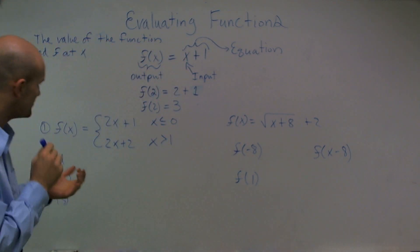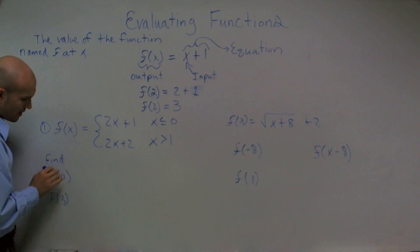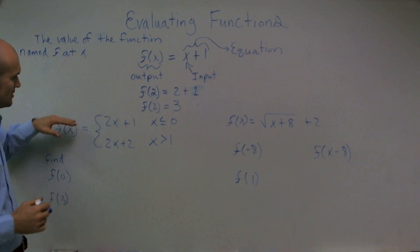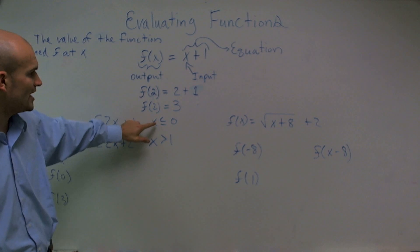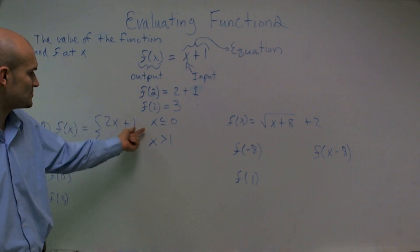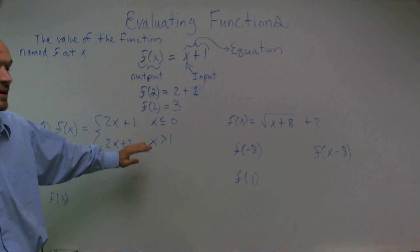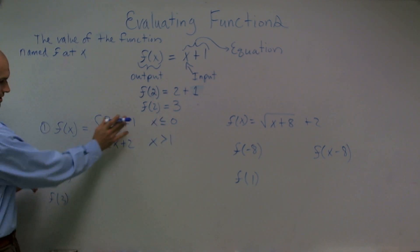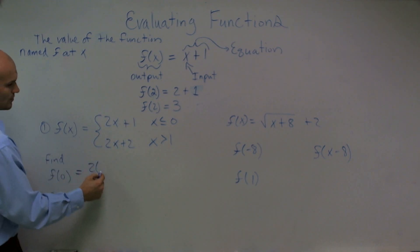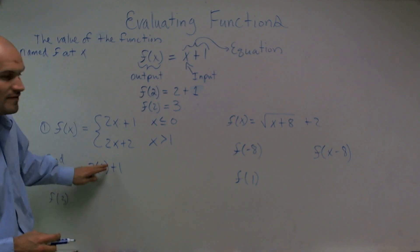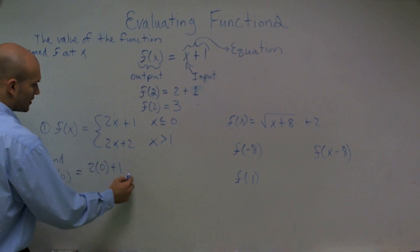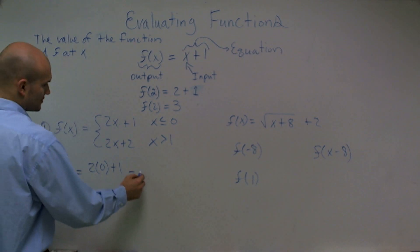Welcome back. What we're doing is evaluating which function to use for our input value. Here I want to find the value of my function f at zero. When looking at the constraint of this piecewise function, it says evaluate 2x plus 1 for all values less than or equal to zero, and use 2x plus 2 for all input values where x is greater than 1. I look at zero — zero is equal to zero, so I can only evaluate it with my top function. 2 times zero plus 1 equals 1. So the value of my function f at zero equals 1.